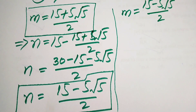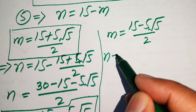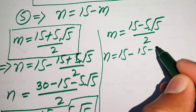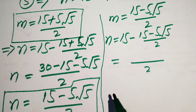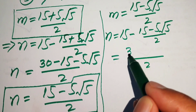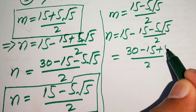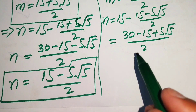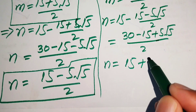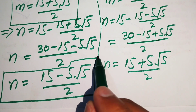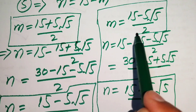For the second case, m = (15 − 5√5)/2. Substituting into n = 15 − m: n = 15 − (15 − 5√5)/2. Taking LCM of 2: n = (30 − 15 + 5√5)/2 = (15 + 5√5)/2.